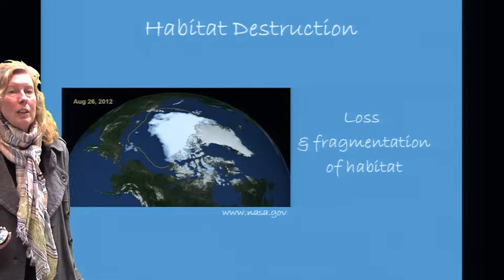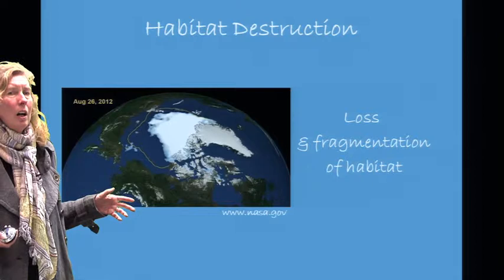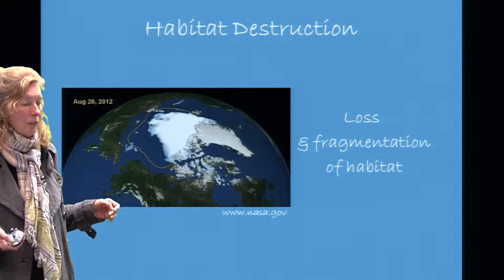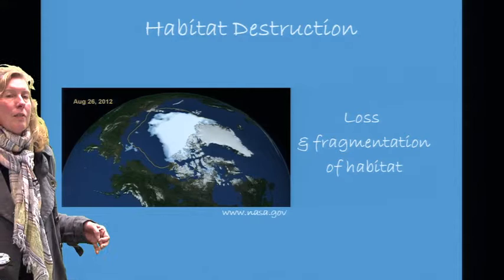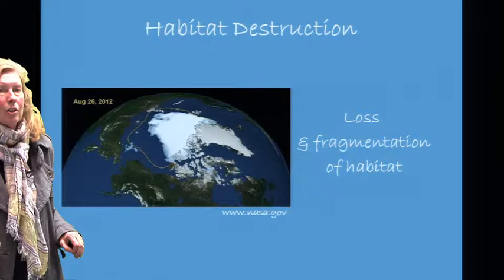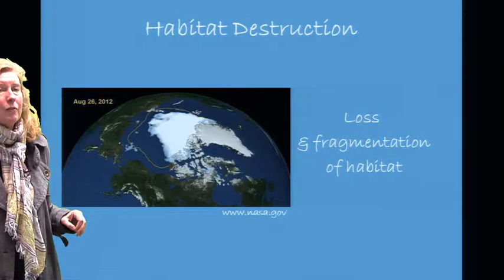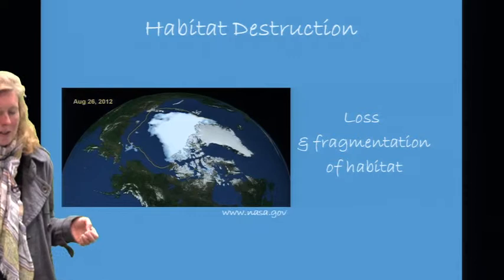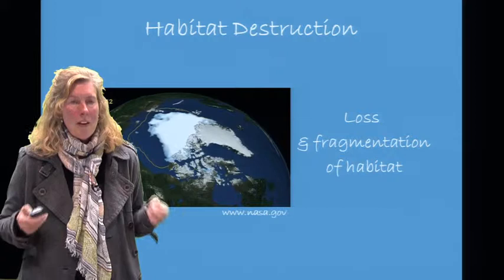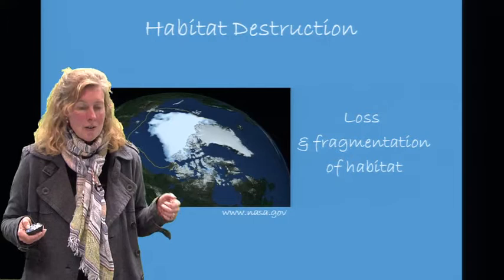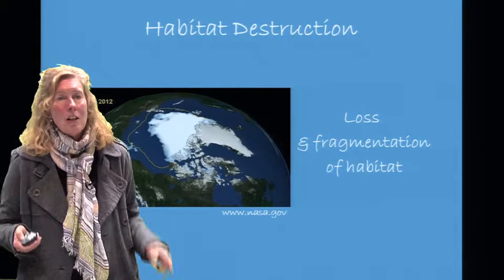Habitat destruction is generally loss and fragmentation of habitat. This satellite image taken in August 2012 shows sea ice at the North Pole looking down on the Arctic. You can see a line showing past ice occurrence — we are noticing approximately a 40% decrease in that ice. This is habitat destruction because for pagophilic — ice-loving — species, they are literally losing their habitat; it is melting beneath their feet. Pagophilic species include polar bears, ice seals, and walrus.